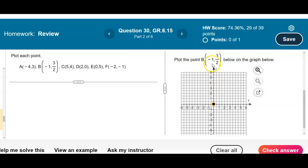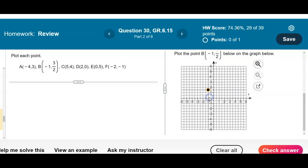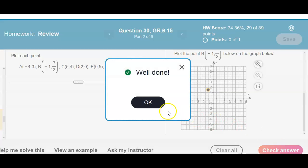Now we want to be able to plot negative 1 and 3 over 2. Now keep in mind that 3 over 2 is the same thing as 1.5. So that means we're going to move to the direction left once. So we're going to go to negative 1. Then we're going to go up 1.5. So that's in between 1 and 2. So therefore let's check our answer. And there we have it.